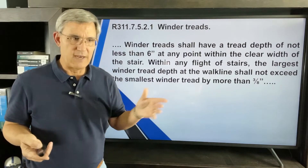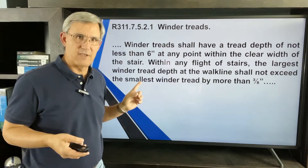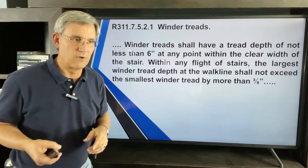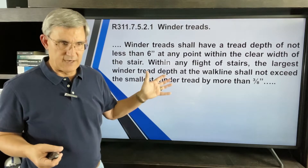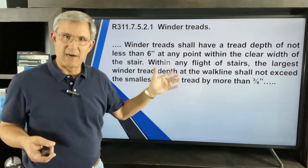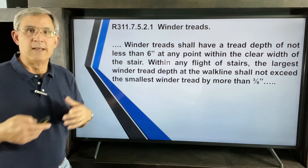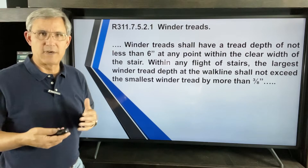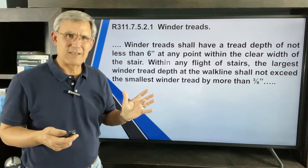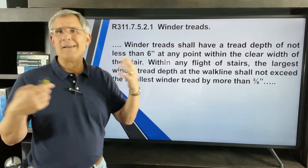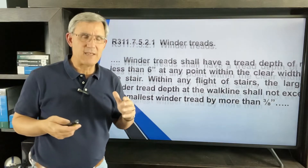There's also the 3/8-inch rule. The largest winder tread depth at the walk line shall not exceed the smallest by 3/8 of an inch — kind of like what we talked about in part two of our stair series. So let's look at what the walk line means with some diagrams.